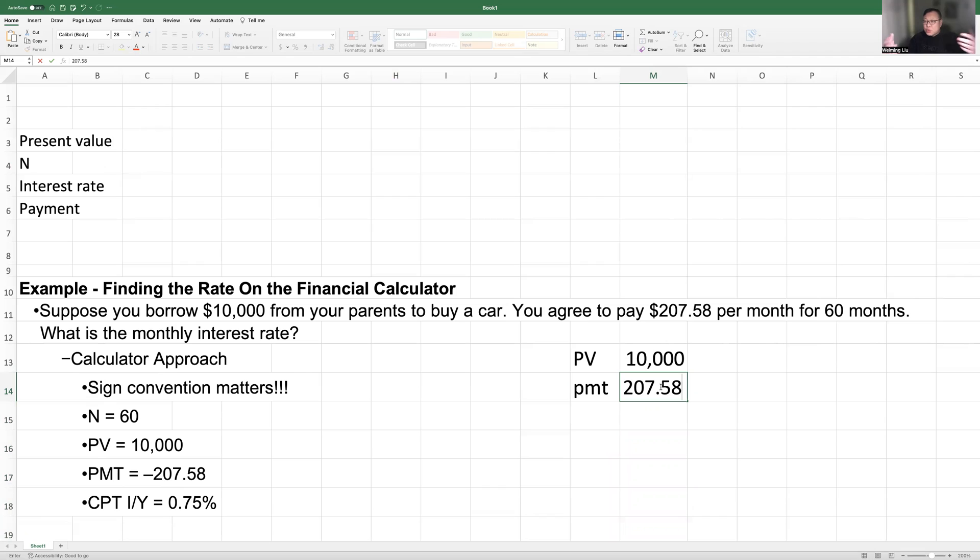So when you get a loan, $10,000, you receive the money from your parents. So the money goes to you. So I use the positive number. But now you are paying back to your parents. So you have to be careful here. This one should be a negative number. And for 60 months, the N would be equals to 60.